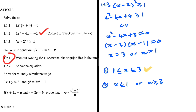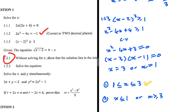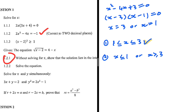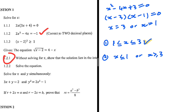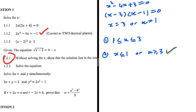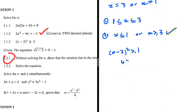Looking at the option where x lies between 1 and 3 — the whole number that lies between them is 2. So let's substitute x equals 2 into our inequality and see if it is satisfied. We get 2 minus 2, squared, which is zero. Is zero greater than or equal to 1? No, it is not. So that first option is not correct.